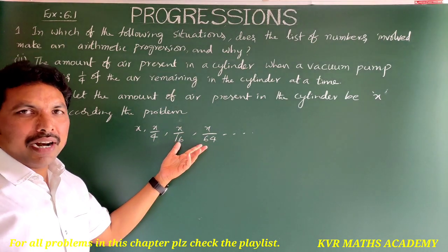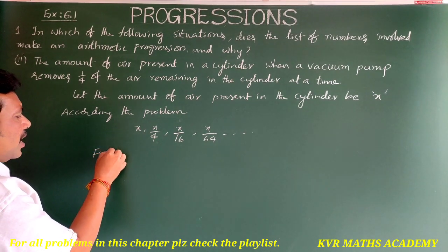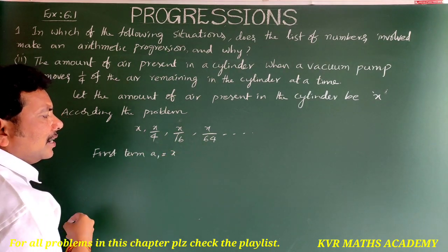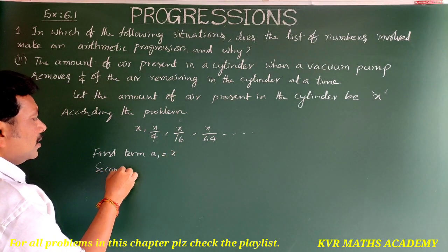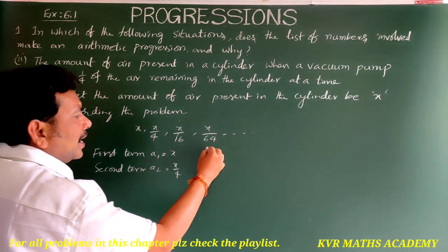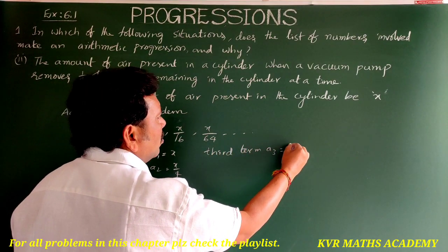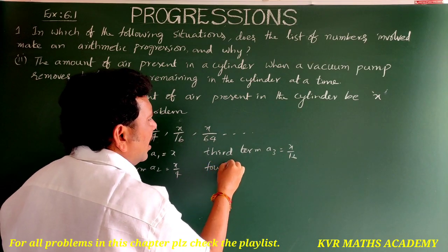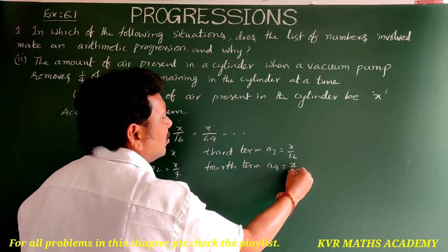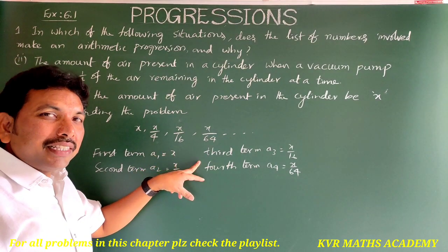So a₁ = x, a₂ = x/4, a₃ = x/16, a₄ = x/64. If the common difference is the same throughout, then the data is in arithmetic progression.